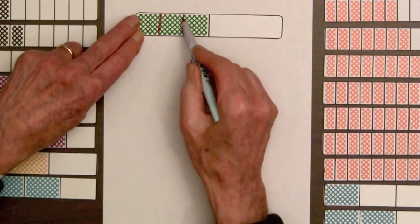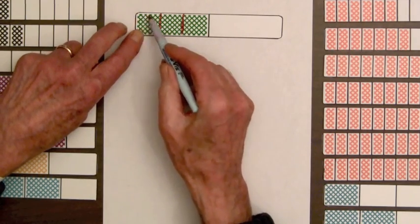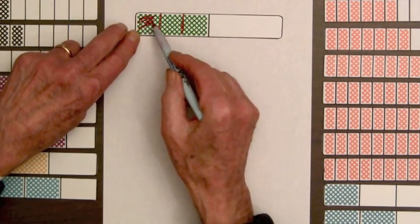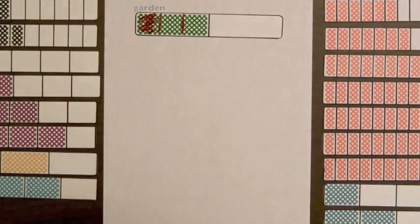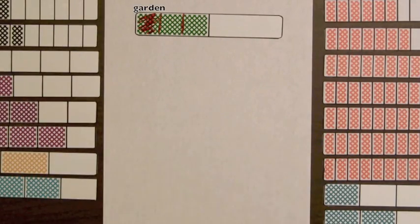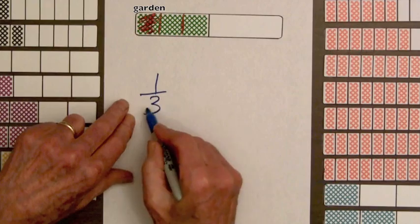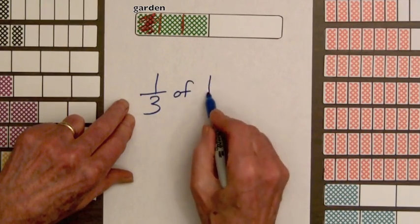And we will put the garden on this part right here. So here is one-third of this lot that is behind the house. And we record what we have done. One-third of one-half.